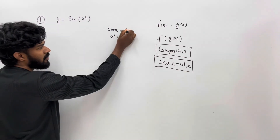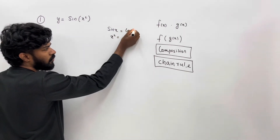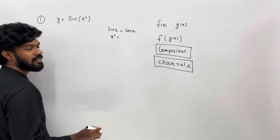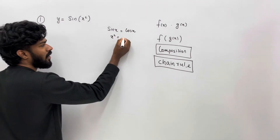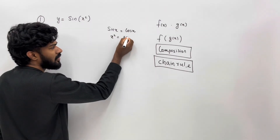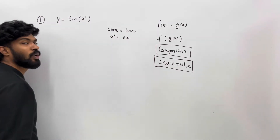Sin x is the derivative of cos x. x squared is the derivative of 2x.